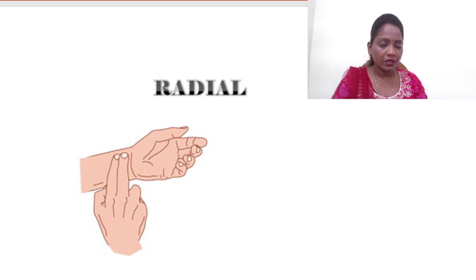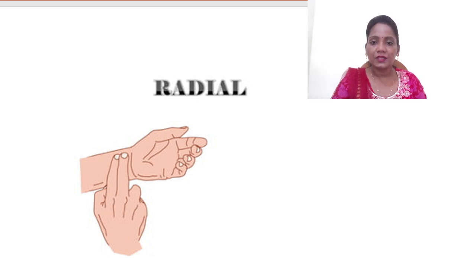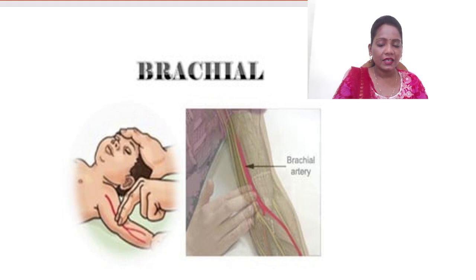If the radial pulse is not palpable — perhaps due to a fracture, bandage, or difficulty finding it — we move to other sites. The next site is the brachial pulse, located in the elbow region, where there is a large brachial artery that can be easily palpated.